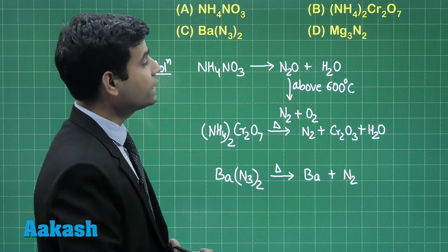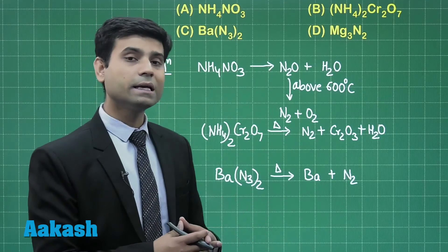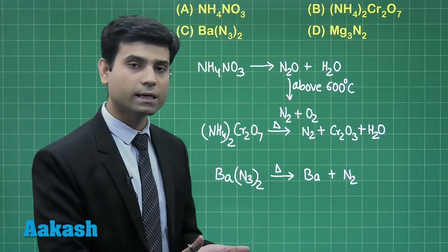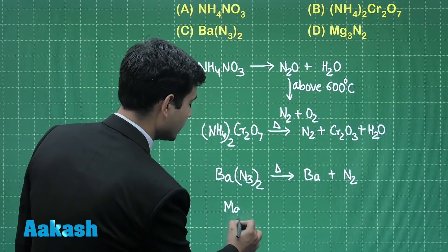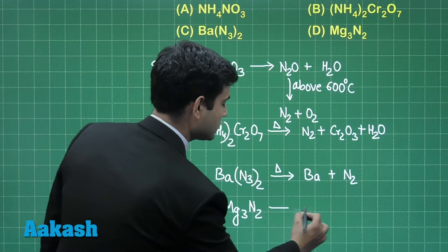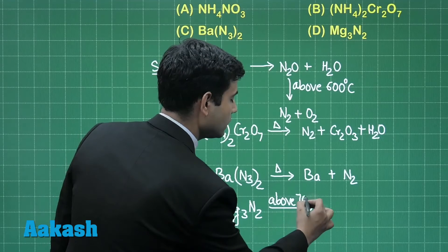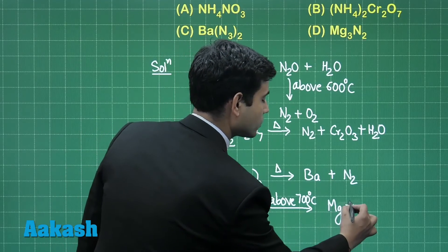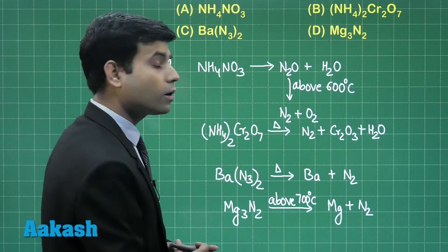Now if I talk about magnesium nitride, the magnesium nitride will not decompose below 700 degree Celsius. It will decompose above 700 degree Celsius only. So magnesium nitride should be heated above 700 degree Celsius in order to give nitrogen gas. We'll get magnesium and N2. So this is also not the answer.